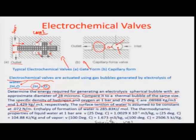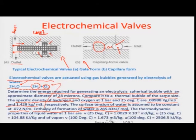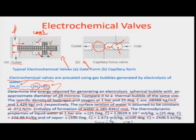The enthalpy of formation of water is given, which is related to the electrochemical reaction. Some thermodynamic properties of liquid water at the same pressure and temperature — specific volume and internal energy — are also given, representing the bubble formed thermally. These properties are given at both the boiling point and room temperature, as they change with temperature.